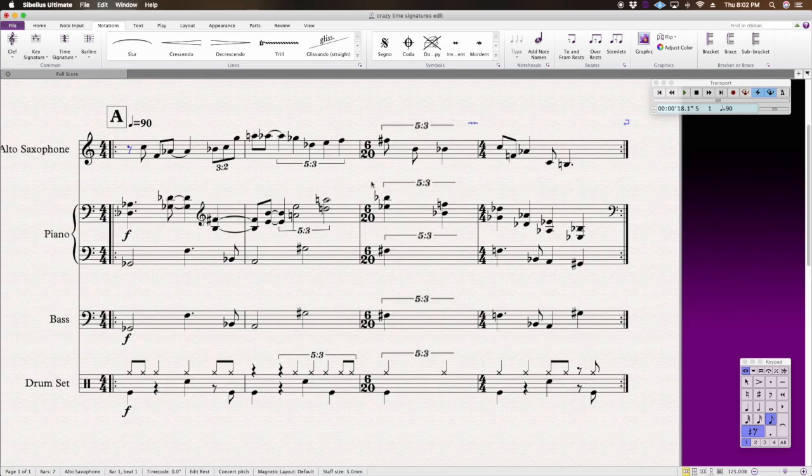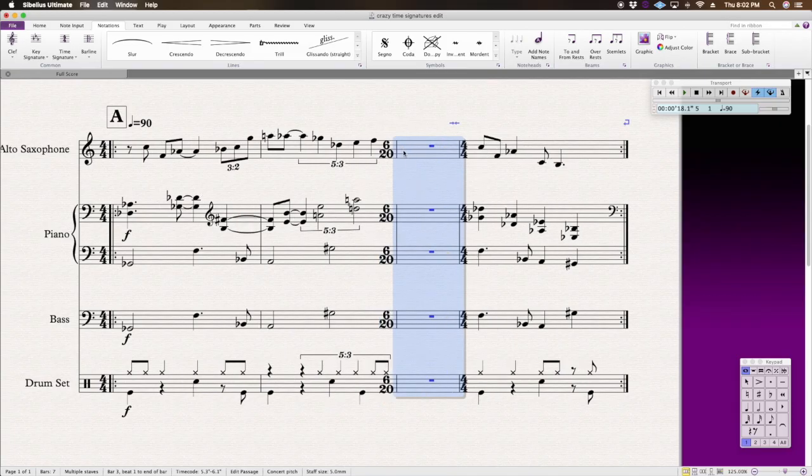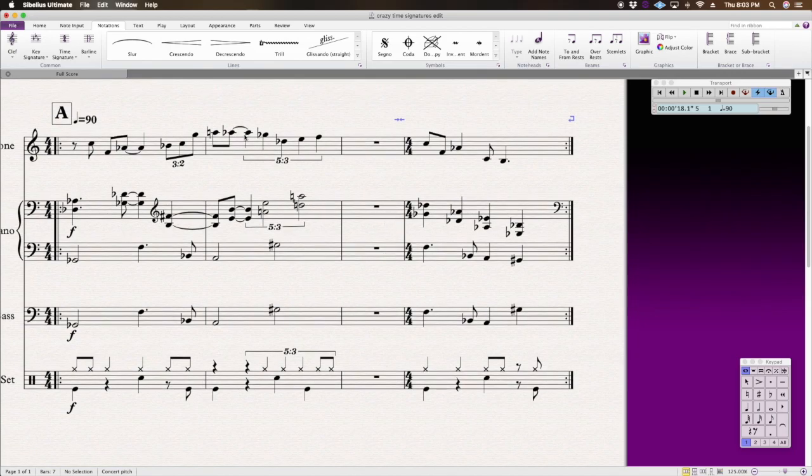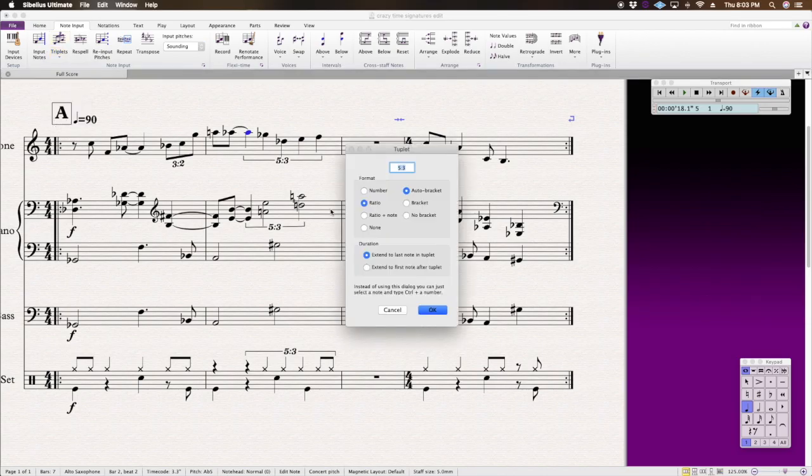So first thing I'm going to do is clear this measure so that I can show you exactly how I made this. So first of all, if you don't know, to create a 5 over 3 tuplet, normally a 5 over 3 that's complete and fits into the context of the measure, you go to note input tuplets, click other, and then you have to write it as a ratio, and you just write 5 colon 3.